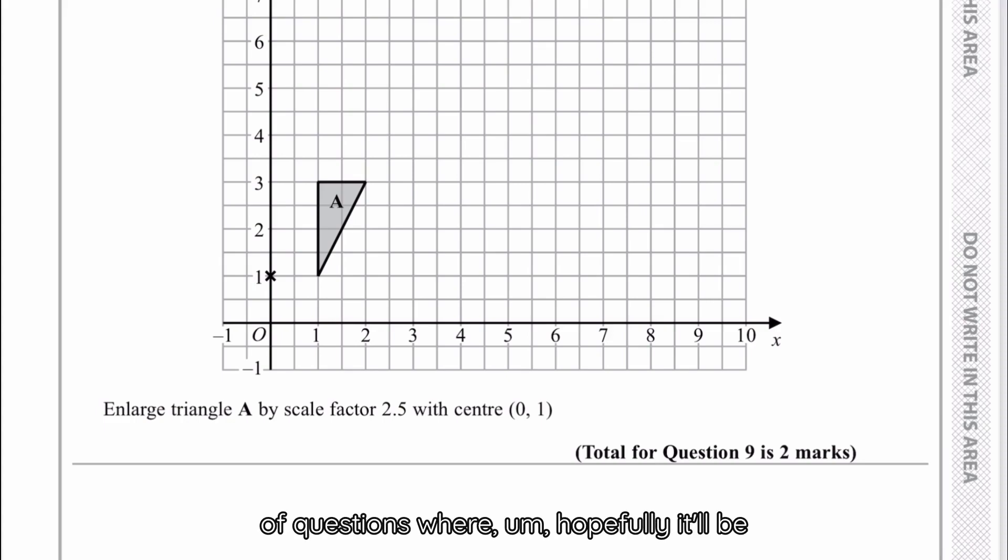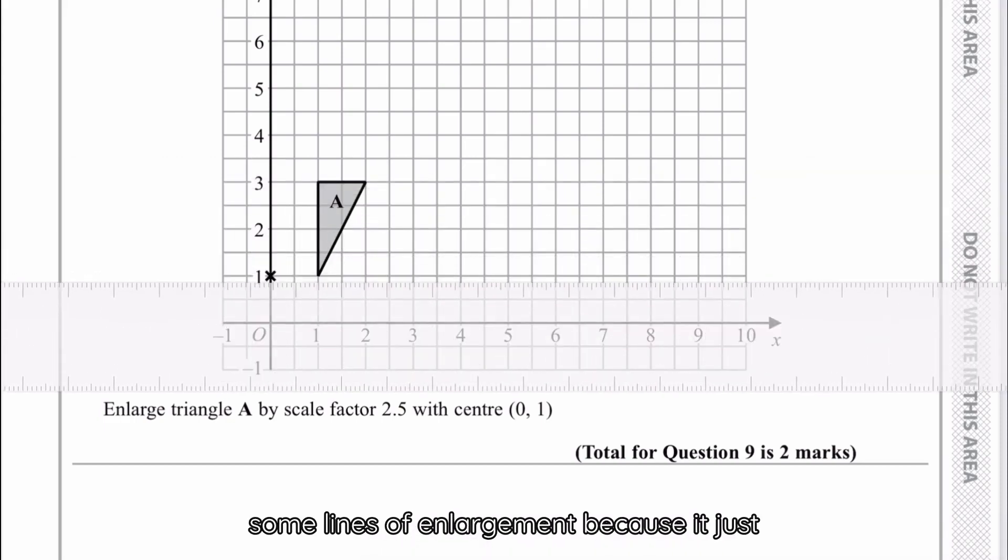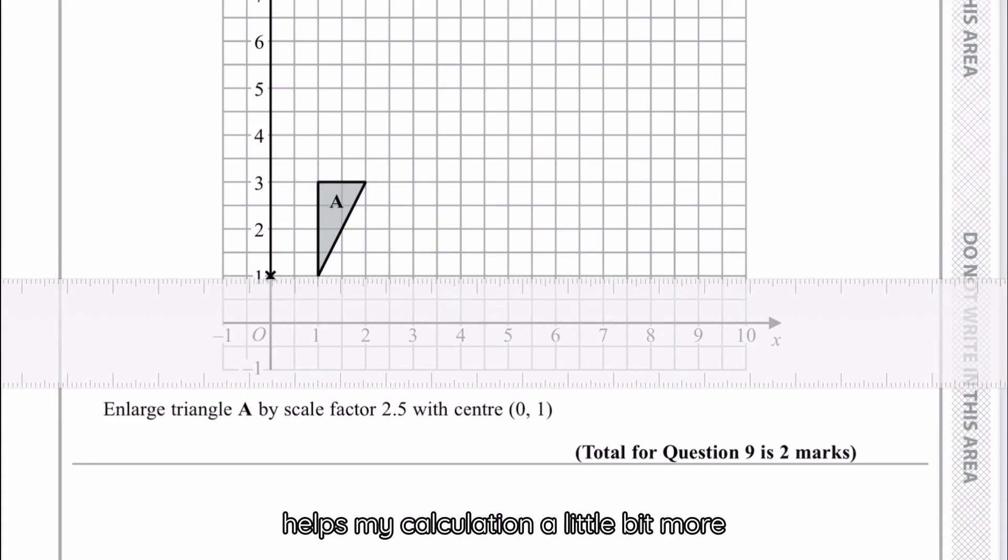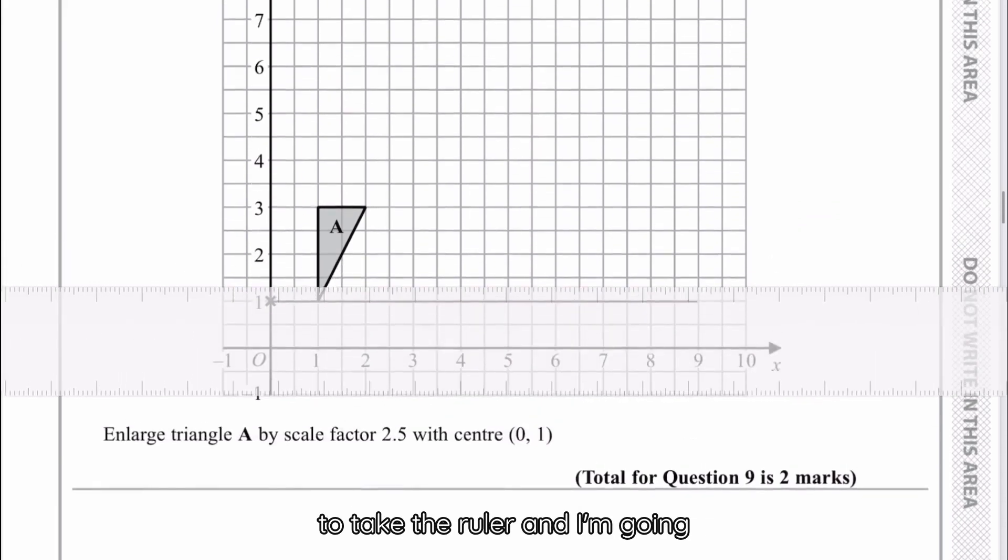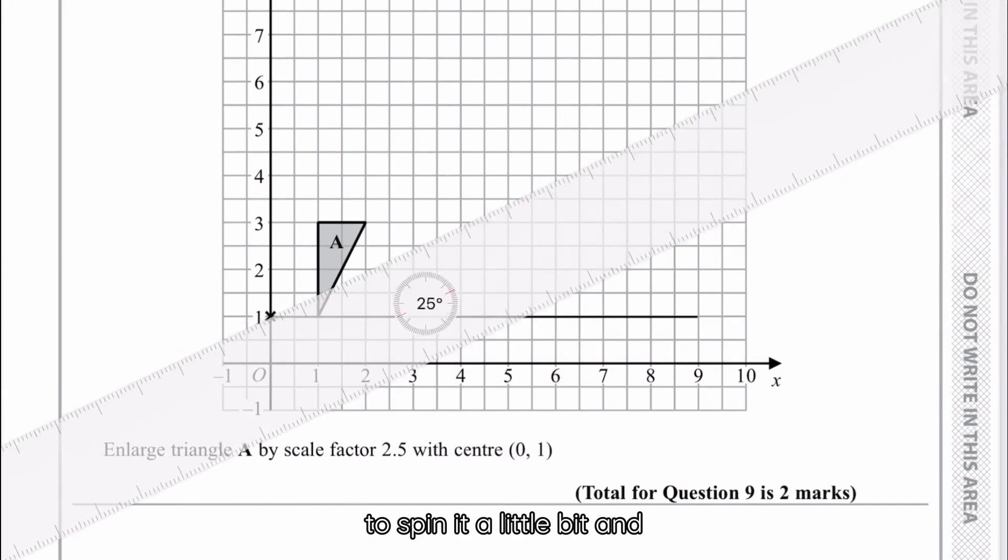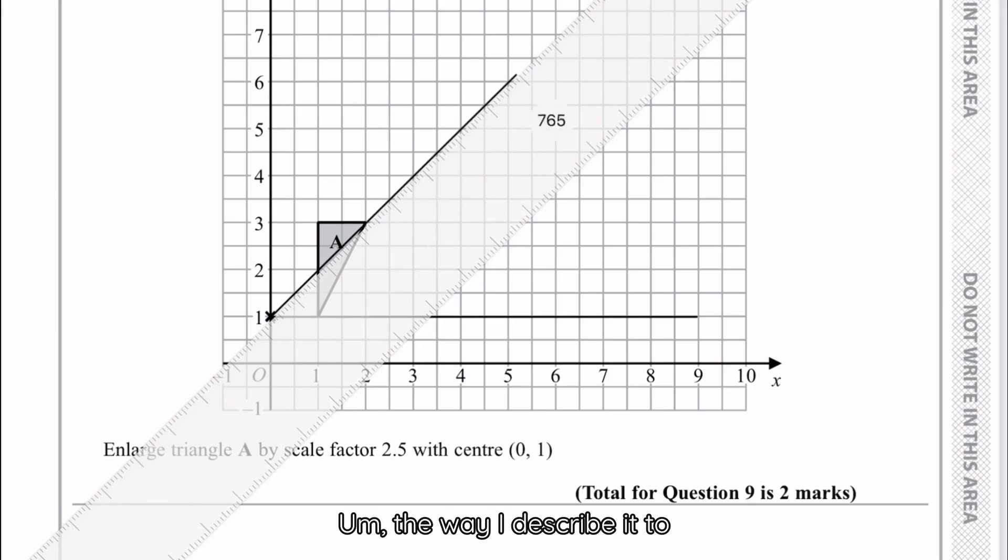I'm just going to mark in first some lines of enlargement because it just helps my calculation a little bit more. So this is going to go along like that, and then I'm just going to take the ruler and I'm going to spin it a little bit and I'm going to go through this corner here.